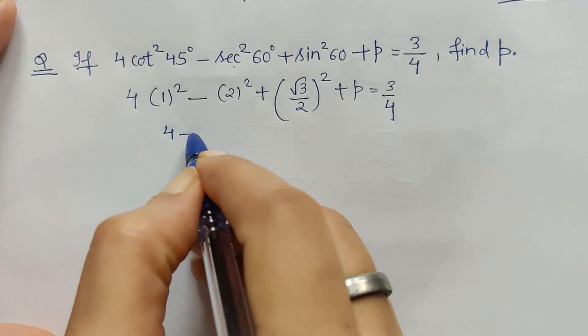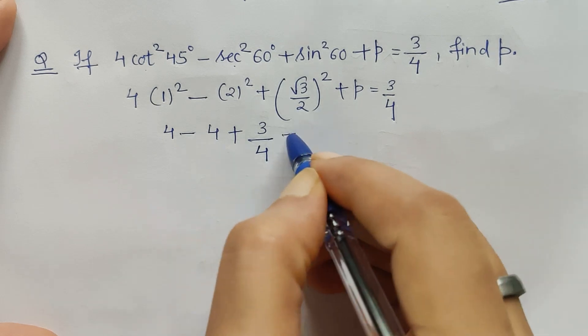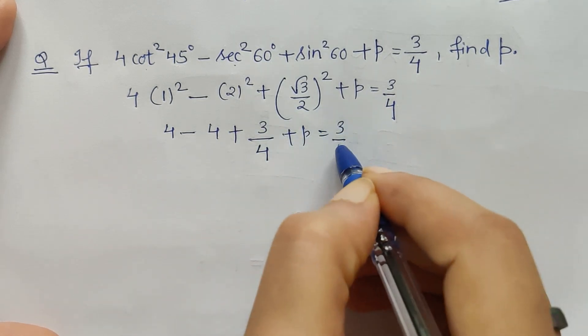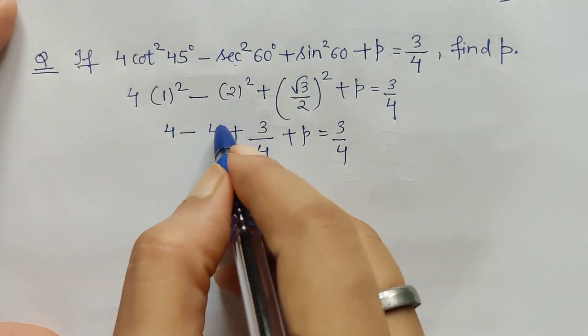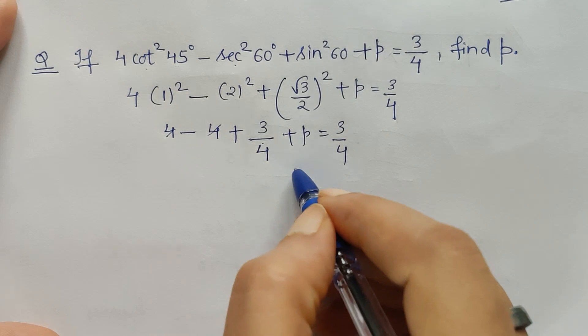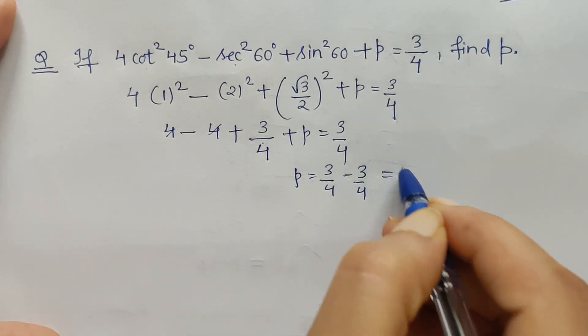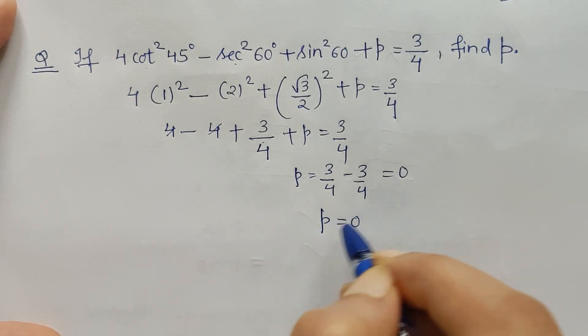So this is 4 - 4 + 3/4 + p = 3/4. 4 minus 4 is 0, so both get cancelled. And when I shift 3/4 on the right-hand side, I get 3/4 - 3/4, which is 0. So the value of p is 0.